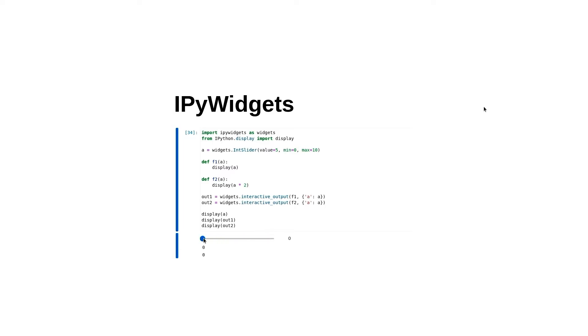From this example here, we can see there's a basic slider. And as you move it back and forth, it's triggering some Python code that, in turn, prints out the square of the number that's on the slider.